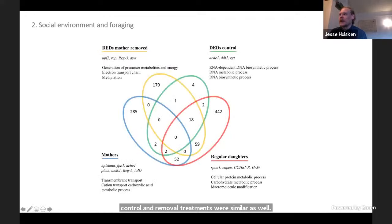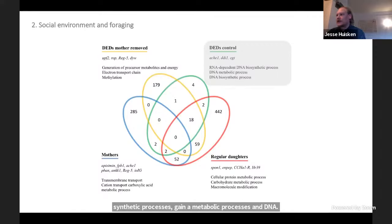Next I used DESeq2 to conduct analysis of differentially expressed genes among these groups. We found they were highly distinct—regular daughters had the largest complement of distinct genes, followed by mothers, then dwarf eldest daughters with mother removed, then control DEDs. This is an illustrative subset of genes and GO terms for GO enrichment among these differentially expressed genes. In mothers, genes were enriched for generation of precursor metabolites and energy, electron transport chains, as well as methylation. In control dwarf eldest daughters, they were enriched for RNA-dependent DNA biosynthetic processes, DNA metabolic processes, and DNA biosynthetic processes. Mothers were associated with transmembrane transport, cation transport, and carboxylic acid metabolic process. Regular daughters were enriched for cellular protein metabolic process, carbohydrate metabolic process, and macromolecule modification.